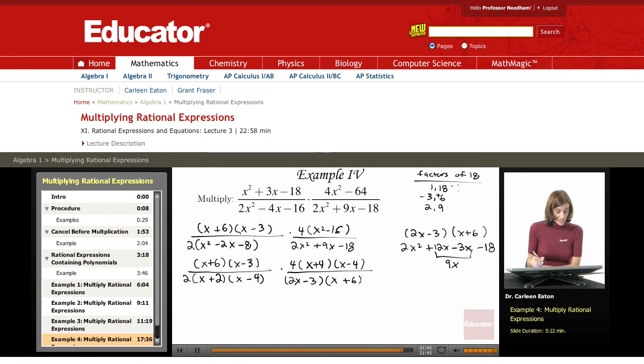Factor first, then cancel. I've got this all factored out and I'm going to look for common factors. For the numbers, I've got a common factor of 2—2 cancels out, 4 becomes 2. I also have a common factor of x plus 6, and x minus 4. That's it for common factors.